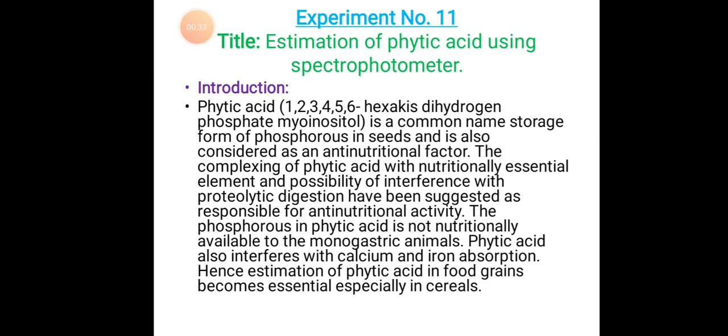What is phytic acid? Chemically it is 1,2,3,4,5,6-hexakis dihydrogen phosphate myoinositol. It is a commonly storage form of phosphorus in seeds and is also considered as an anti-nutritional factor.